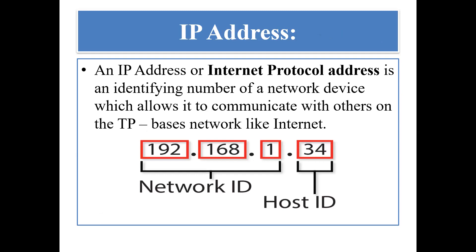Next is IP address — internet protocol address. An IP address is an identifying number of a network device which allows it to communicate with others on an IP-based network like the internet. Every computer has a unique identifying number when it uses the internet or the network. For example, you might have seen addresses like 192.168.1.34 — these are examples of IP addresses. The first part represents the network ID and the remaining part is the host ID.